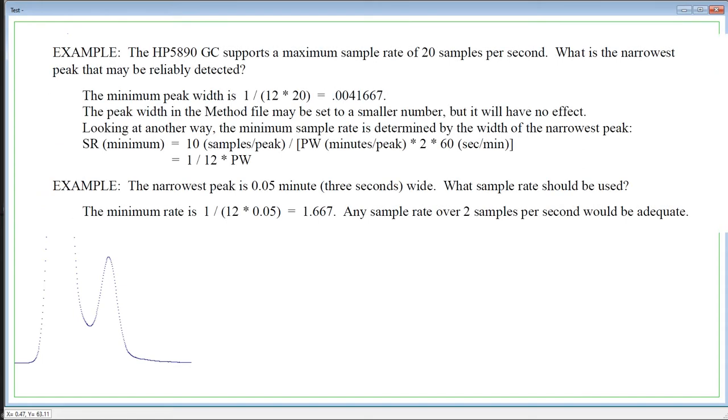Example: the HP 5890GC supports a maximum sample rate of 20 samples per second. What is the narrowest peak that may be reliably detected? The minimum peak width is 1 divided by 12 multiplied by 20 equals 0.0041667. The peak width in the method file may be set to a smaller number, but it will have no effect.